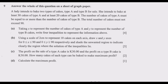That's four marks. Question B: using a scale of 2 cm to represent 10 cakes on each axis, draw X and Y axes for X from 0 to 90 and Y from 0 to 90 respectively, and shade the unwanted region to indicate clearly the region where the solution of the inequalities lies. Question C: the profit on the sale of type A cake is 30 and the profit on type B cake is 50 — how many cakes of which type can be baked to make maximum profit? Question D: calculate the maximum profit.